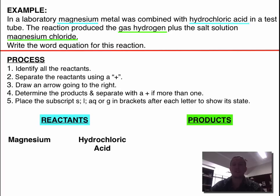The next step is to pull these down. We pull the reactants down, the magnesium and the hydrochloric acid. They go on the left-hand side.